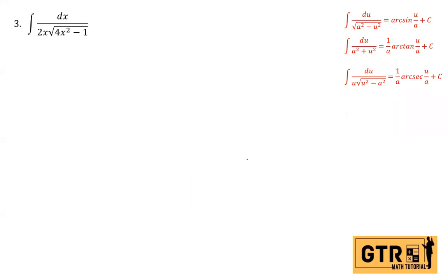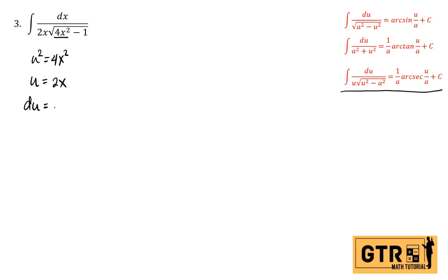Number three. We have the integral of dx over 2x times the square root of 4x squared minus 1. This fits the arcsecant formula: du over u times the square root of u squared minus a squared. Here u squared equals 4x squared, so u equals 2x. The constant term is 1, so a squared equals 1 and a equals 1. The differential: du equals 2 dx.